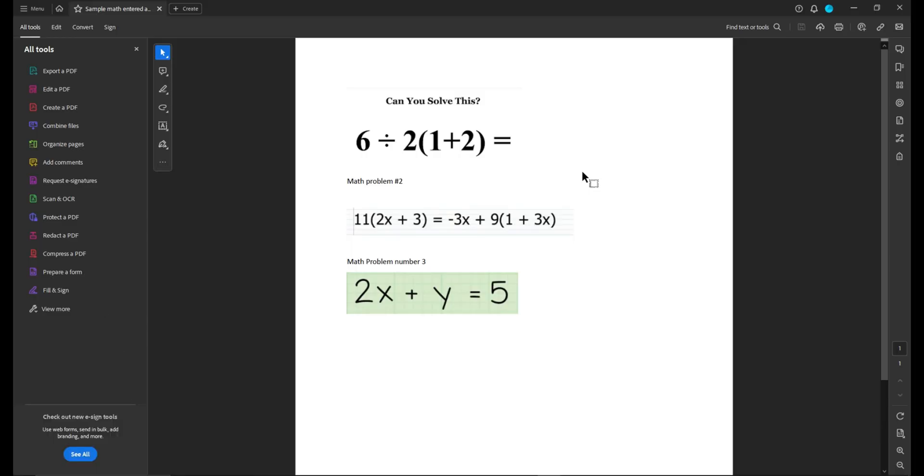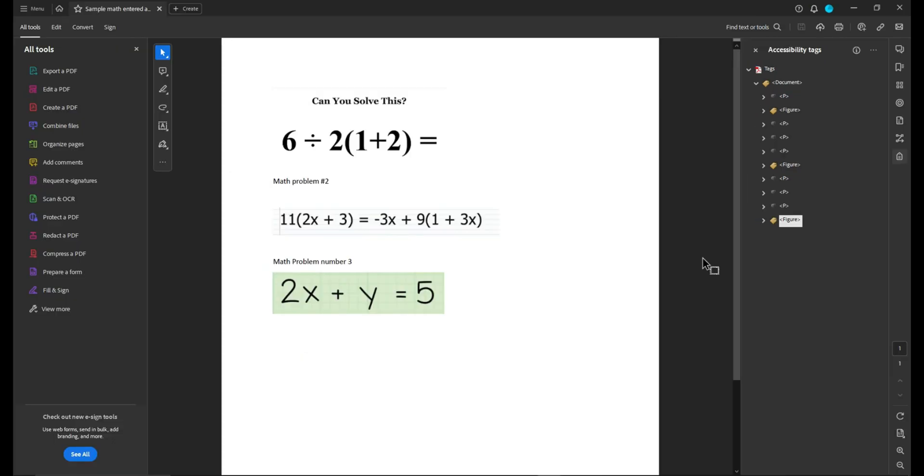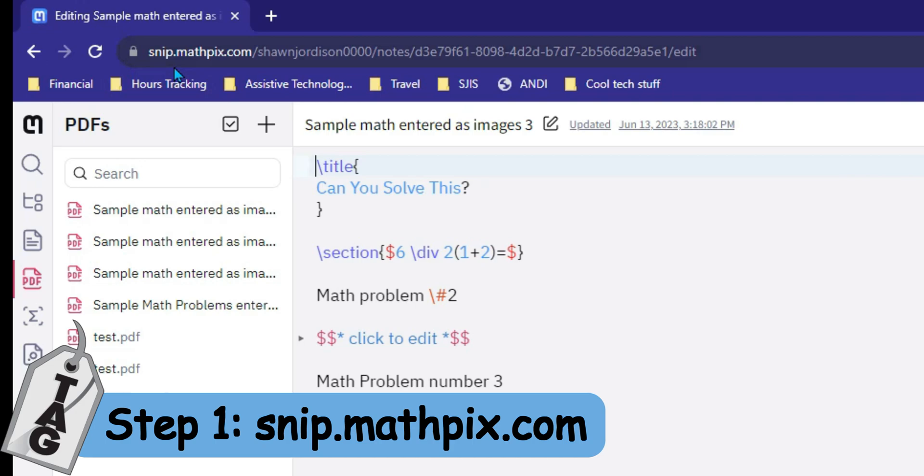I have just opened up a PDF that has three different images on it that contain math. In the tags panel, we can determine that these are also images, and we're going to go to snip.mathpix.com.